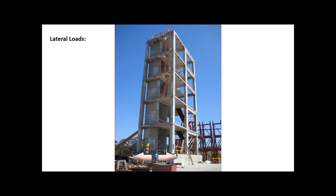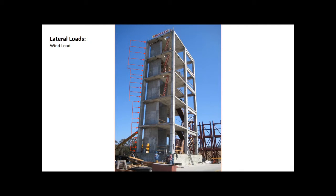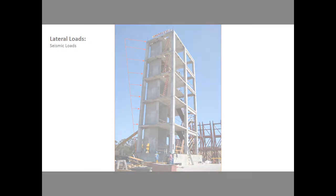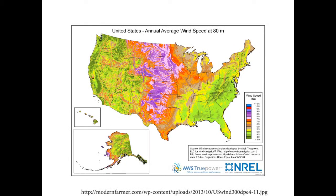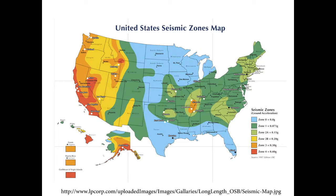Lateral loads act in the direction that is parallel to the ground surface, i.e. horizontal, and as a result, are applied horizontally to a building. Wind and seismic forces are two of the primary types of lateral loads that must be considered in the design of any structure. In some regions, wind loads may be more significant, while in others, the expected load due to an earthquake may be larger.